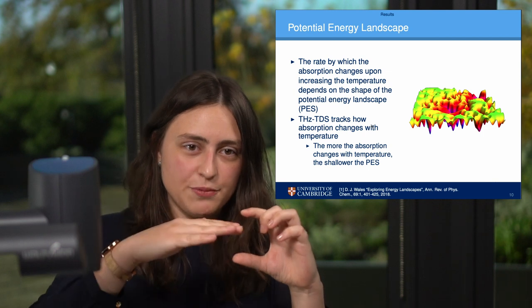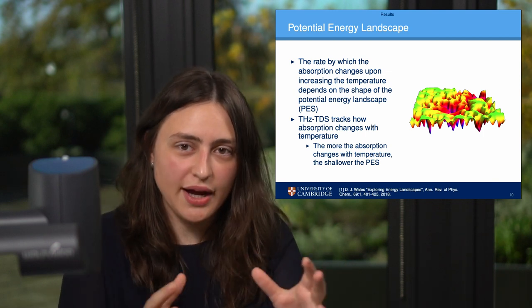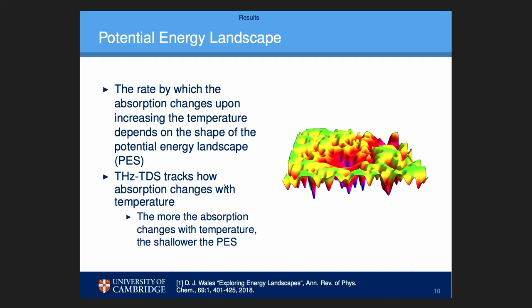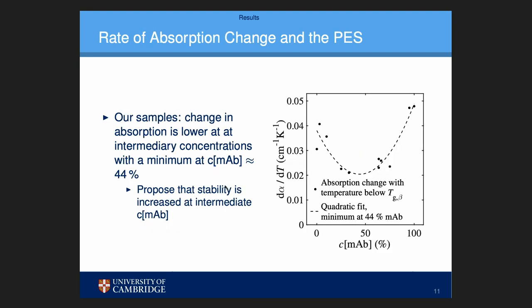We must have many small wells, so that a small change in temperature gives us access to a high number of other conformations. With that in mind, we can look at the graph on the right-hand side showing the absorption change with temperature, plotted for a range of different antibody concentrations.